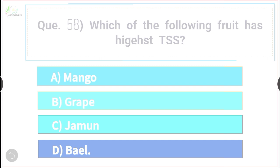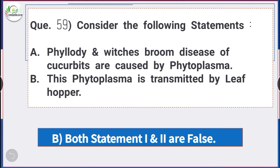Question number 59: Consider the following statements. Statement A: Phyllody and witches' broom disease of cucurbits are caused by phytoplasma. Statement B: This phytoplasma is transmitted by leaf hopper. The correct answer is option B — both statements 1 and 2 are false.